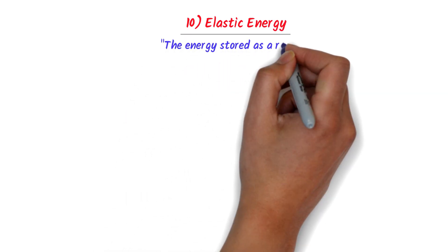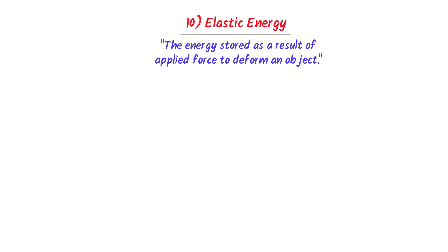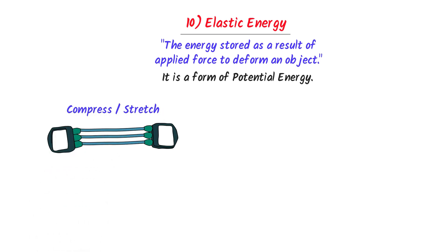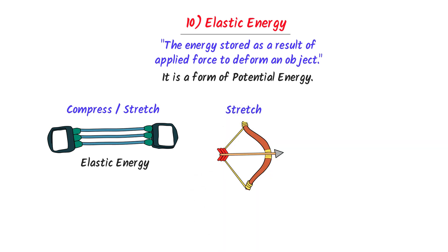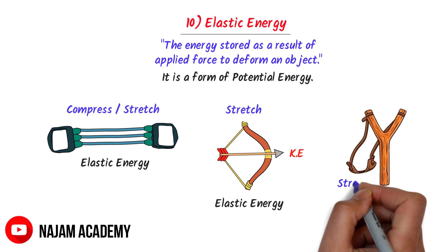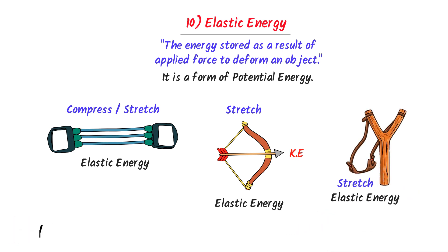The last and tenth form of energy is elastic energy. The energy stored as a result of applying force to deform an elastic object is called elastic energy. Also note that it is a form of potential energy. For example, when you compress or stretch a spring, elastic potential energy is stored in it. Secondly, when you stretch a bow, elastic potential energy is stored in it — once it is released, the elastic potential energy changes to kinetic energy of the arrow. Thirdly, when you stretch the rubber of a slingshot, elastic potential energy is stored in it — once you release it, the elastic potential energy changes to kinetic energy. Thus remember that elastic energy is a form of potential energy.